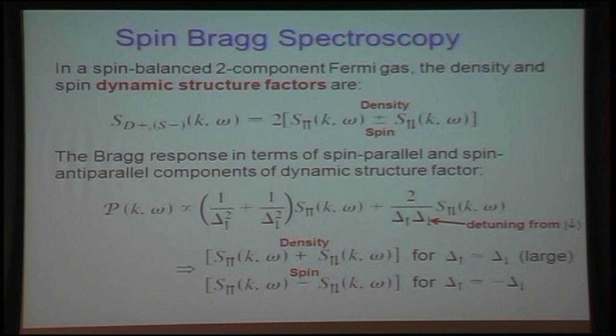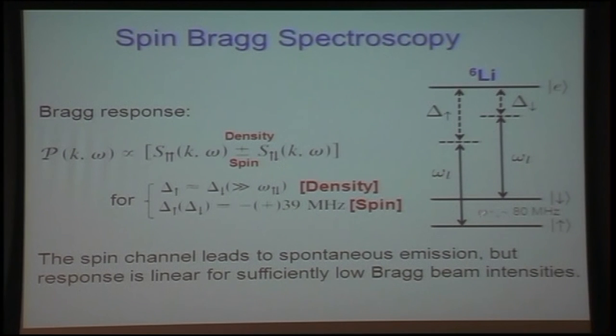The Bragg response, in terms of the spin parallel and spin anti-parallel components, given by an expression proportional to this quantity, delta here, this is the detuning from spin down, and this is detuning from spin up of the Bragg beams, the detuning. And we have here the spin parallel term and spin anti-parallel term. And it's possible now to separate these two components. We can select the density component by setting the detunings approximately equal and large compared with the hyperfine splitting in the ground state. Or we can select the spin component by setting the two detunings, one equal to the negative of the other detuning, and equal to about half the hyperfine splitting, as we show here. Hyperfine splitting is about 80 megahertz, so we set the detuning equal to plus or minus about 40 megahertz for the spin component, and for the density component we set the detunings large compared with this hyperfine splitting. The spin channel leads to spontaneous emission, but it's possible to overcome this by just checking to work in the linear response range by being very careful to use low enough Bragg frequency intensities, so you don't get significant spontaneous emission.